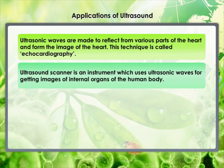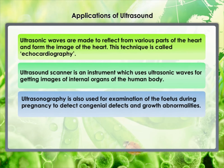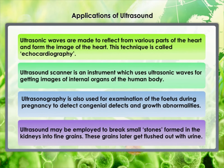An ultrasound scanner uses ultrasonic waves to get images of internal organs of the human body. A doctor may image the patient's organs such as the liver, gallbladder, uterus, kidney, etc. It helps the doctor detect abnormalities such as stones in the gallbladder and kidney, or tumours in different organs. Ultrasonic waves travel through the tissues of the body and get reflected from regions where there is a change in tissue density. These waves are converted into electrical signals used to generate images, displayed on a monitor or printed on film — this technique is called ultrasonography. Ultrasonography is also used for examination of the fetus during pregnancy to detect congenital defects and growth abnormalities. Ultrasound may also be employed to break small stones in the kidneys into fine grains, which are later flushed out with the urine.